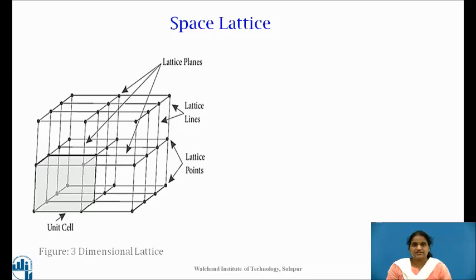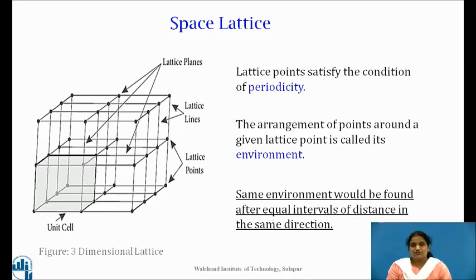Hence, the crystal structure, that is the arrangement of atoms in the crystal, can be understood with reference to the lattice. We also observe that a given point in the lattice is surrounded by a specific number of lattice points which are located at equal distances. This arrangement of points around a given lattice point is called its environment. Thus, the same environment would be found after equal intervals of distance in the same direction.